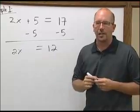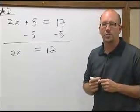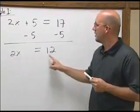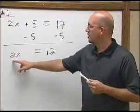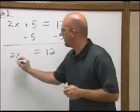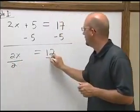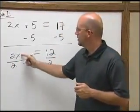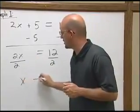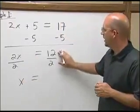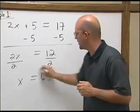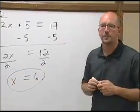We now have a problem that looks exactly like the ones we dealt with in podcast two, a number times our variable. To undo our multiplication, we will divide. 2 divided by 2 gives us just the x left over, and our 12 divided by 2 gives us 6. X equals 6 is our answer.